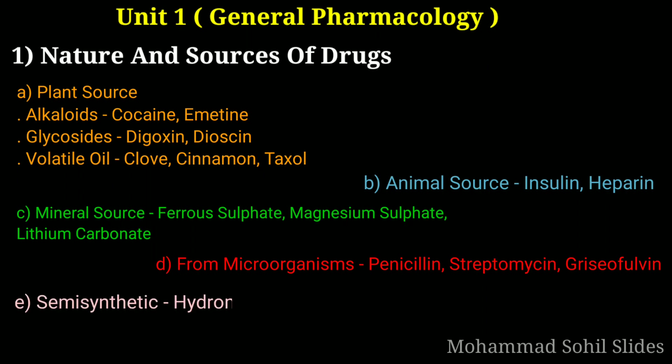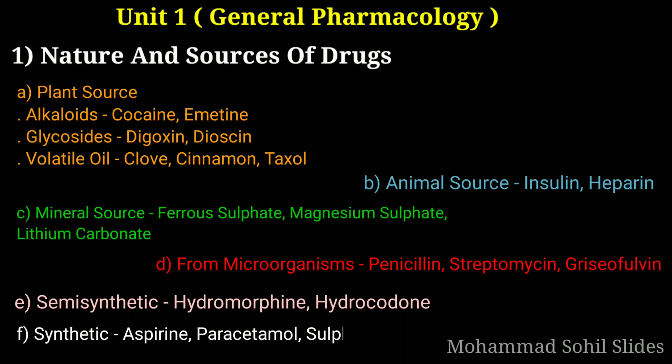Then second, semi-synthetic sources. Hydromorphone and hydrocodone come under semi-synthetic sources. Now third, synthetic sources — aspirin, paracetamol, and sulfonamides come under synthetic sources. Now fourth, additional drugs produced by genetic engineering: first human insulin, which is also called humulin, and hepatitis B vaccine. So these are the sources of drugs.